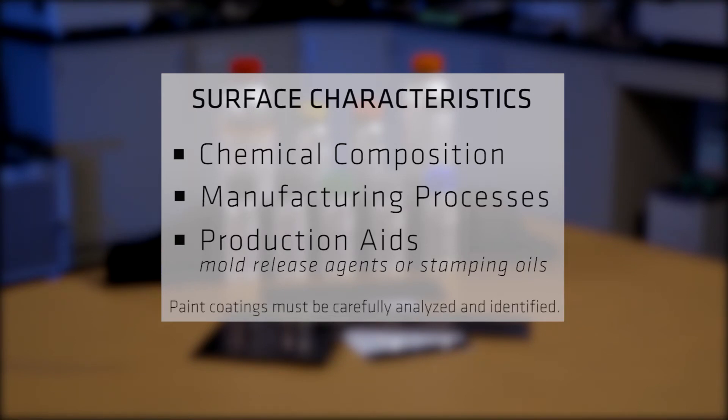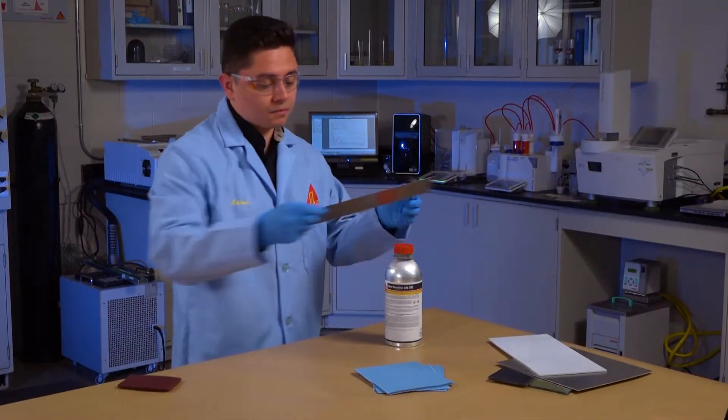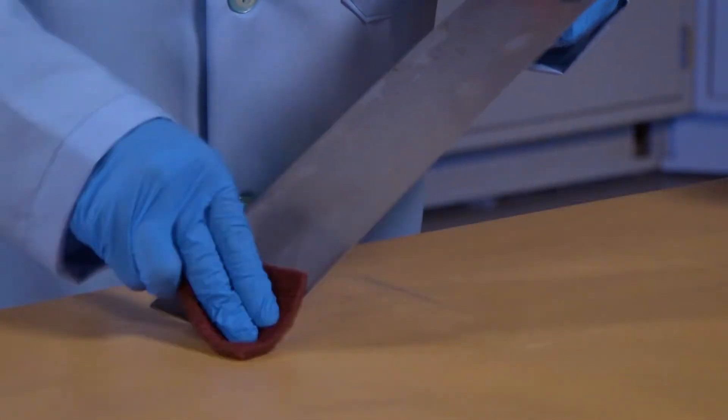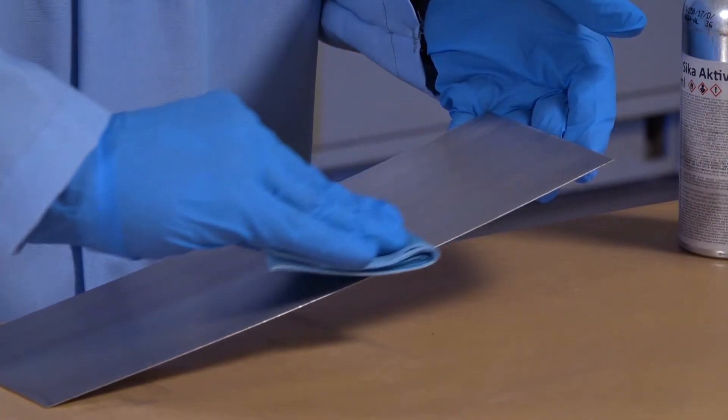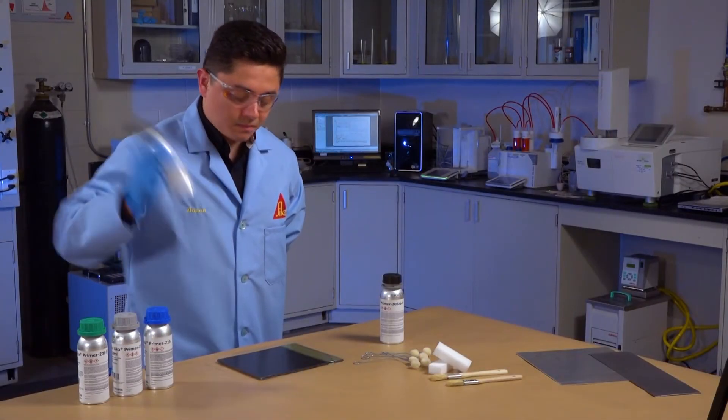Paint coatings must be carefully analyzed and identified. The chemical composition of the paint, type of substrate preparation, application parameters, and the presence of softeners and other additives in the paint modifying texture or finish can affect final adhesion.